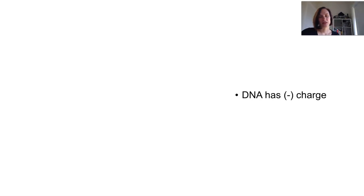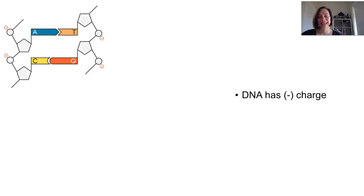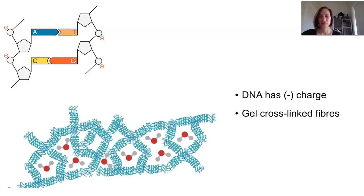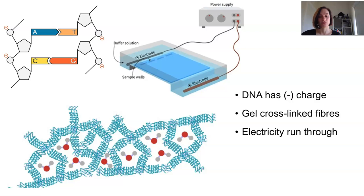Now, gel electrophoresis relies on the idea that DNA has this overall negative charge due to a phosphate group in its backbone. So samples of fragmented DNA are placed inside a gel that at the molecular level has a whole heap of cross-linked matrix of fibers. And this is then placed into a liquid buffer and electricity is run through it.